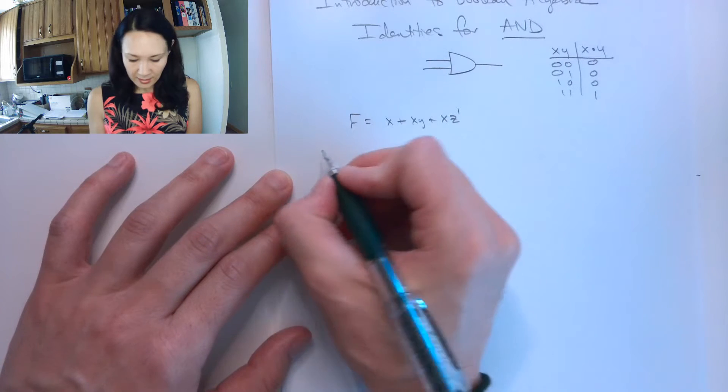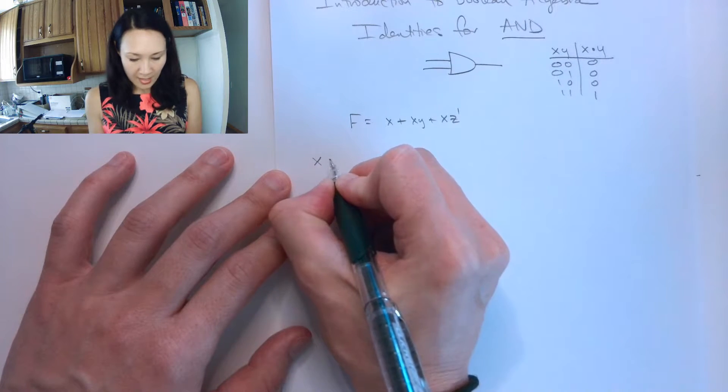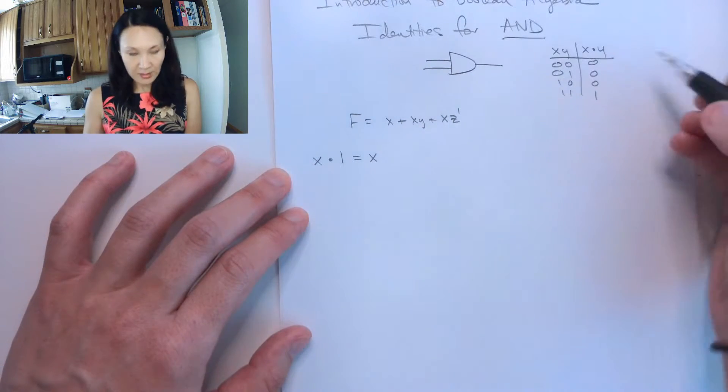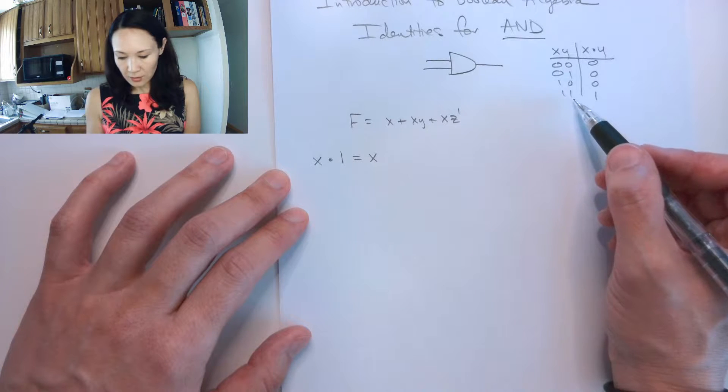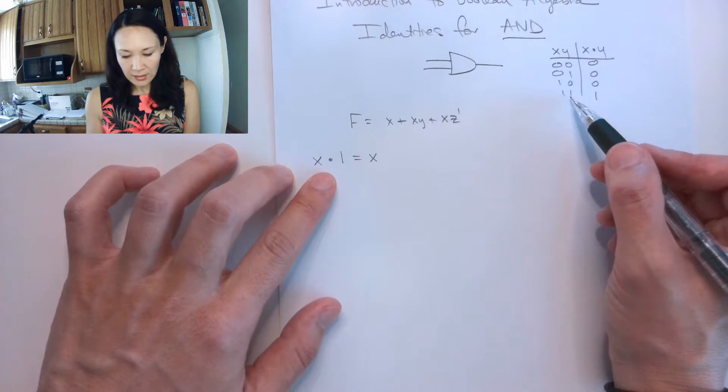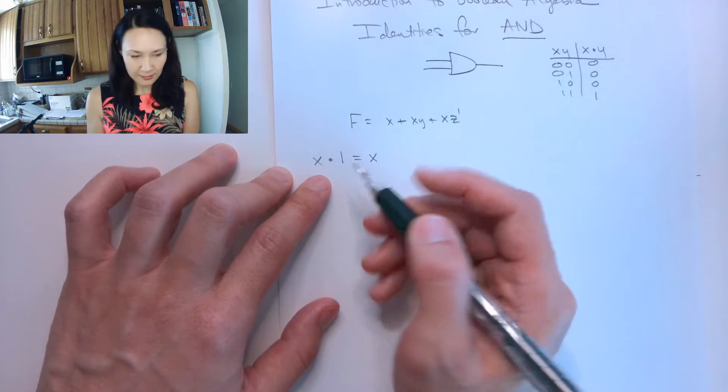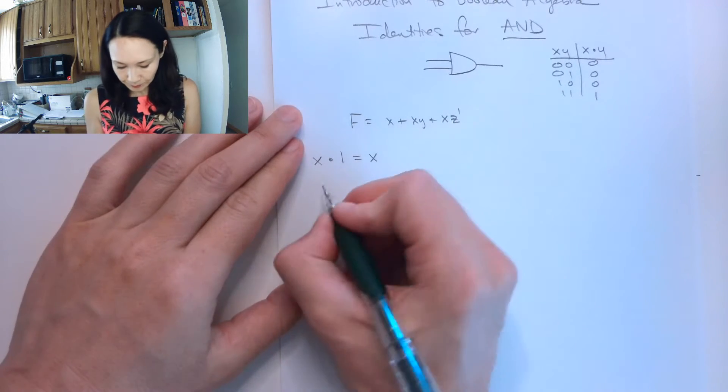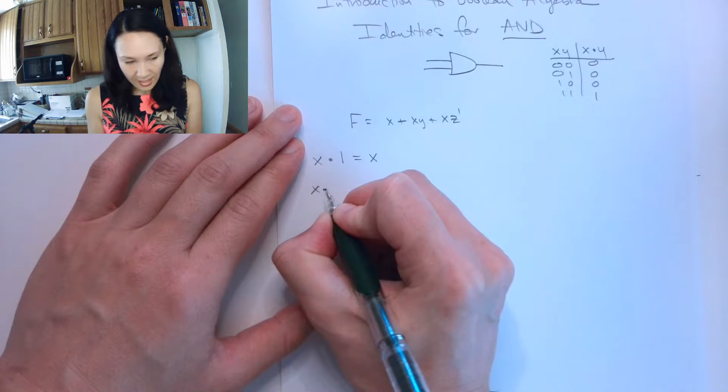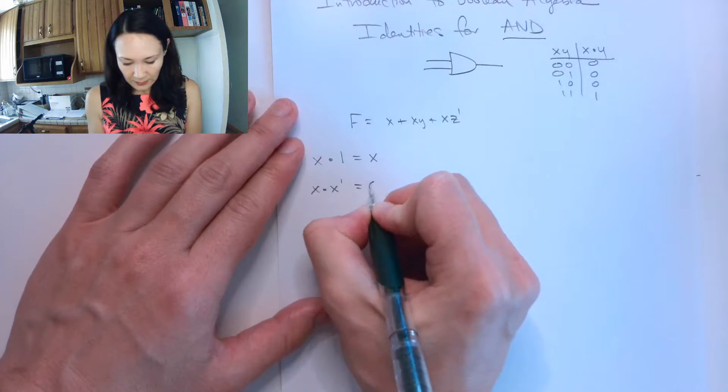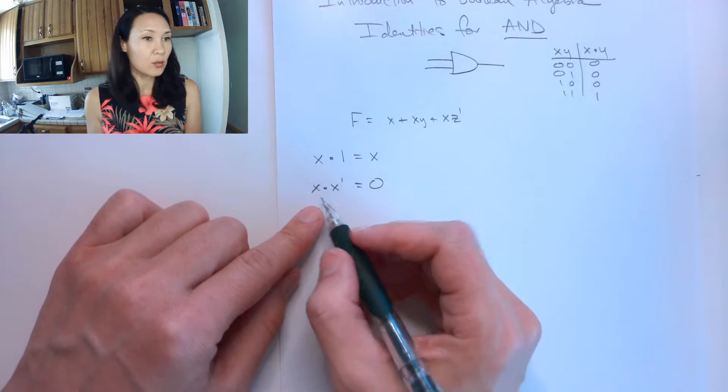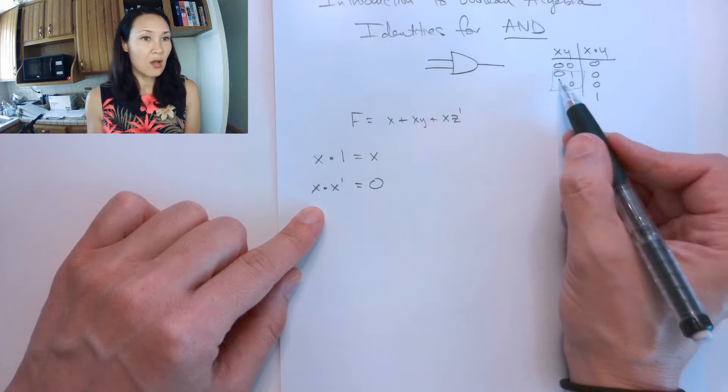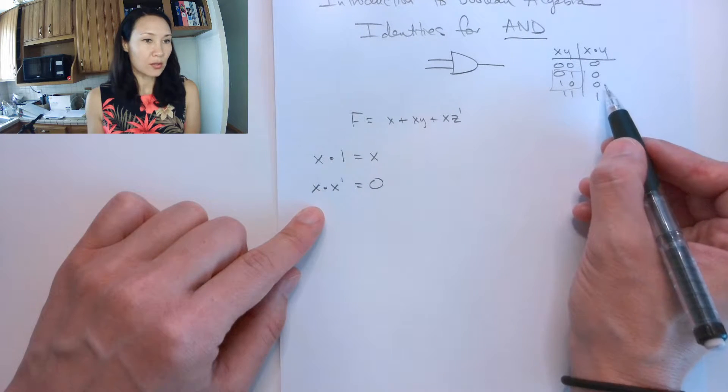The first one is that x ANDed with 1 equals x. This makes sense because if we look at our truth table, as long as we AND something with 1, we get the value of whatever our original input is. This makes 1 the identity element for ANDing. Next, x ANDed with x naught is 0, because if we have something ANDed with its inverse, they're going to be different, so our result is always 0.